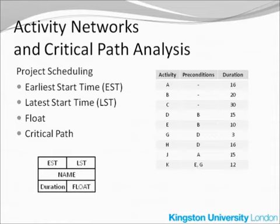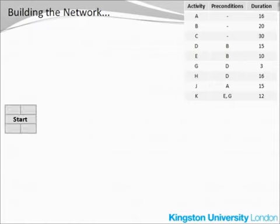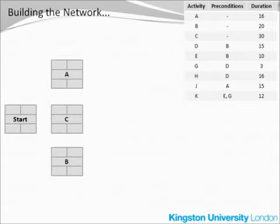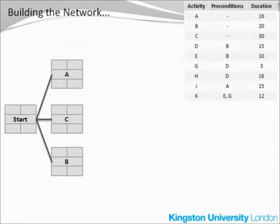Let's start with our drawing. I have put the table of activities conveniently in the corner of the screen, and I can start building the network by putting the start node on the left-hand side. Now we can choose all those activities that have no preconditions — these are activities A, B, and C. We simply put them next to the start node. The lines indicate that each of the activities A, B, and C may follow immediately after the start node. We should use arrows here, but most usually we simply put striped lines, and we assume that the flow of activities goes either from left to right, or top to bottom.